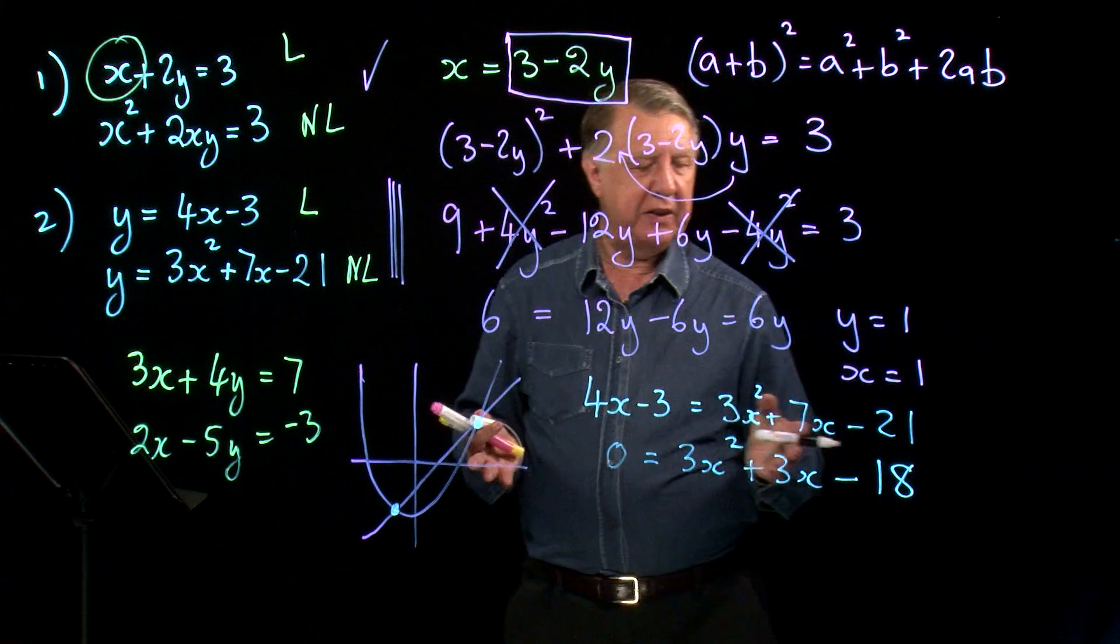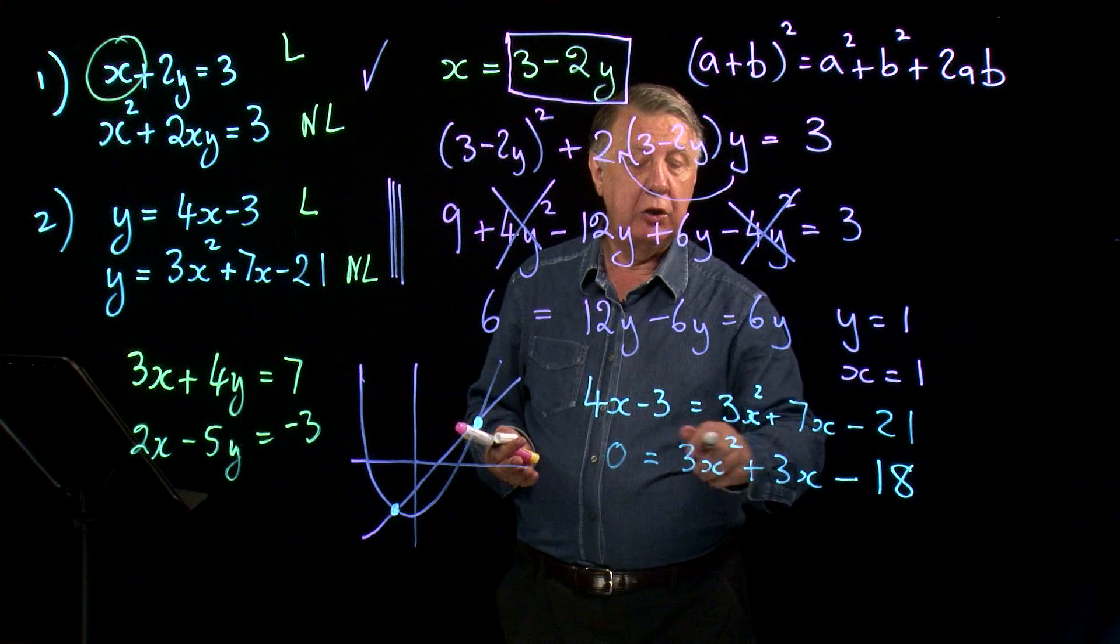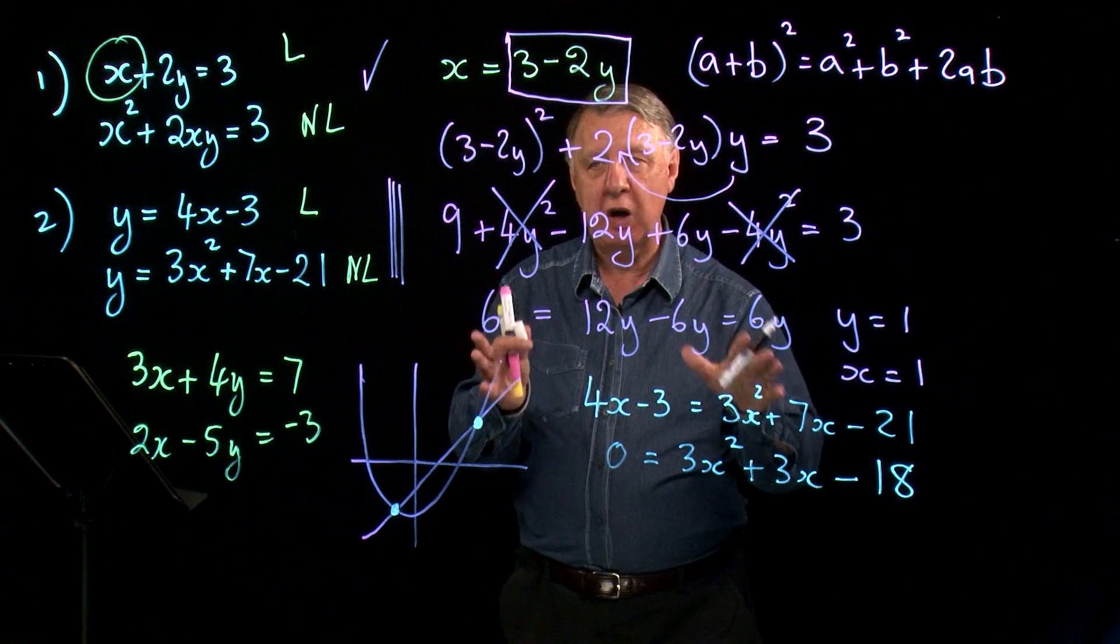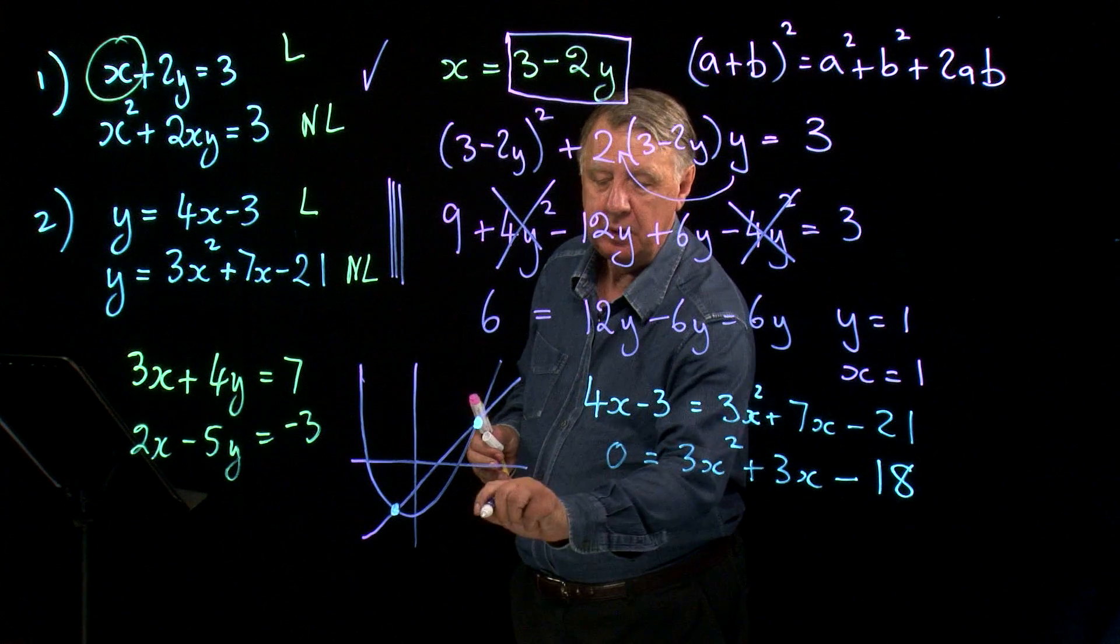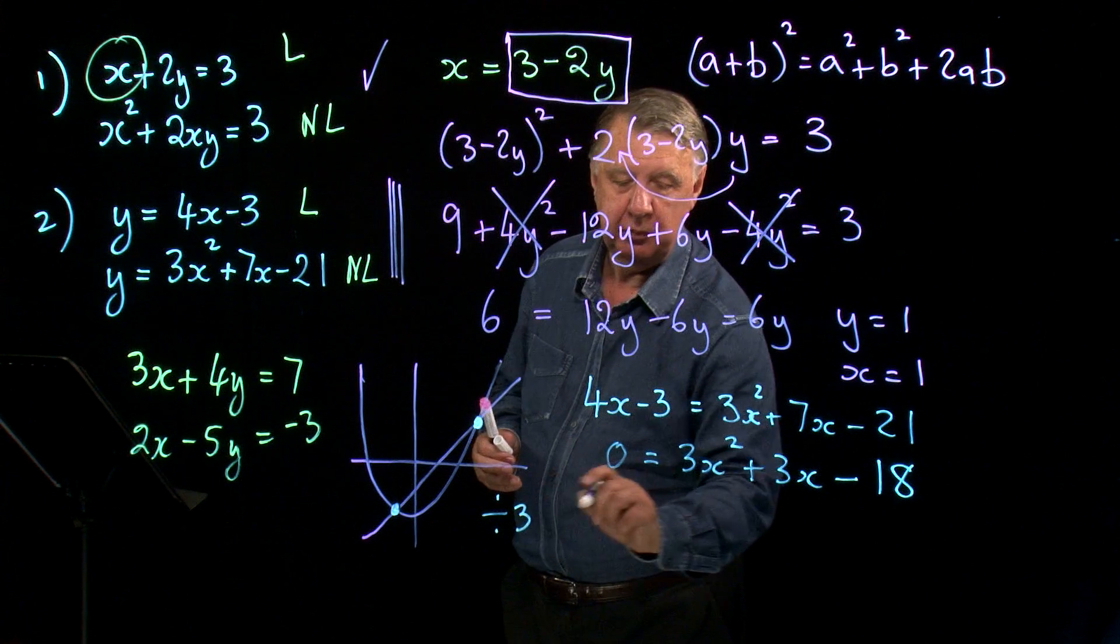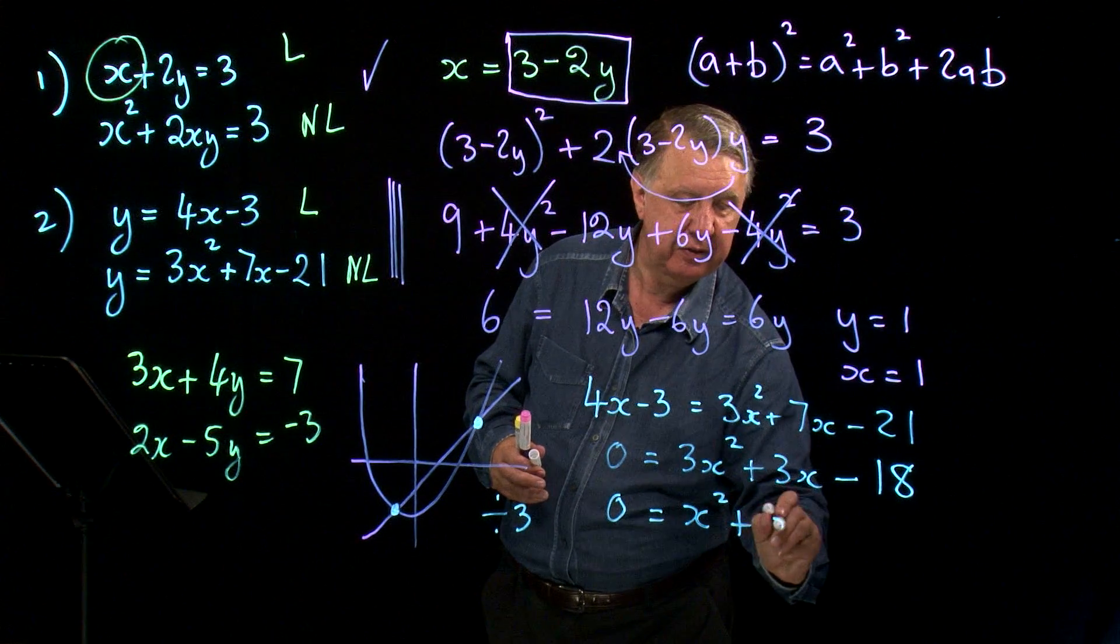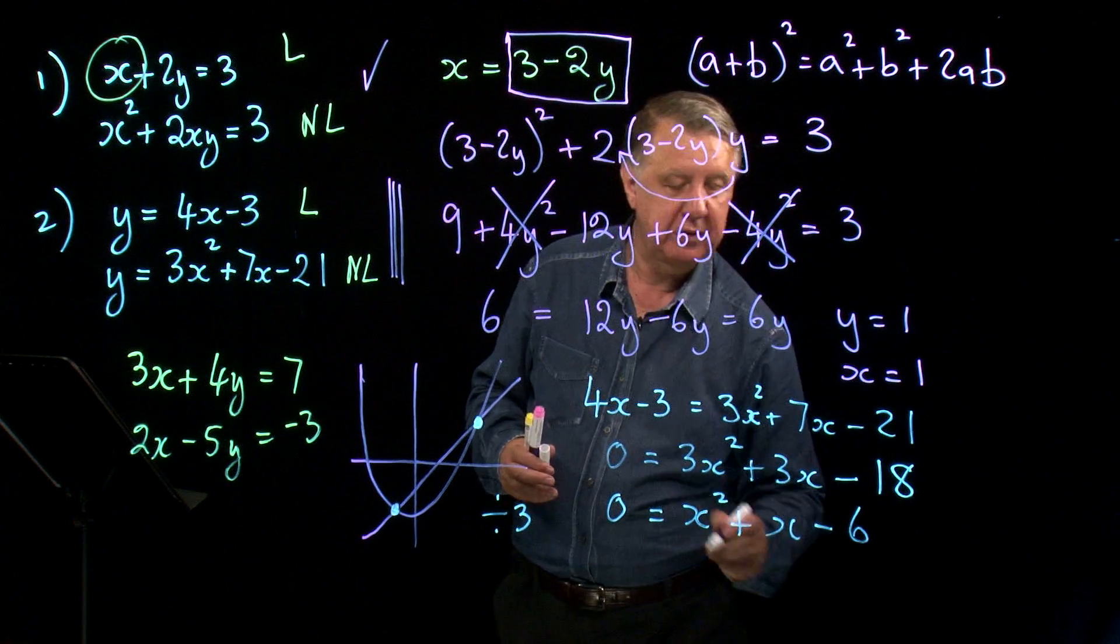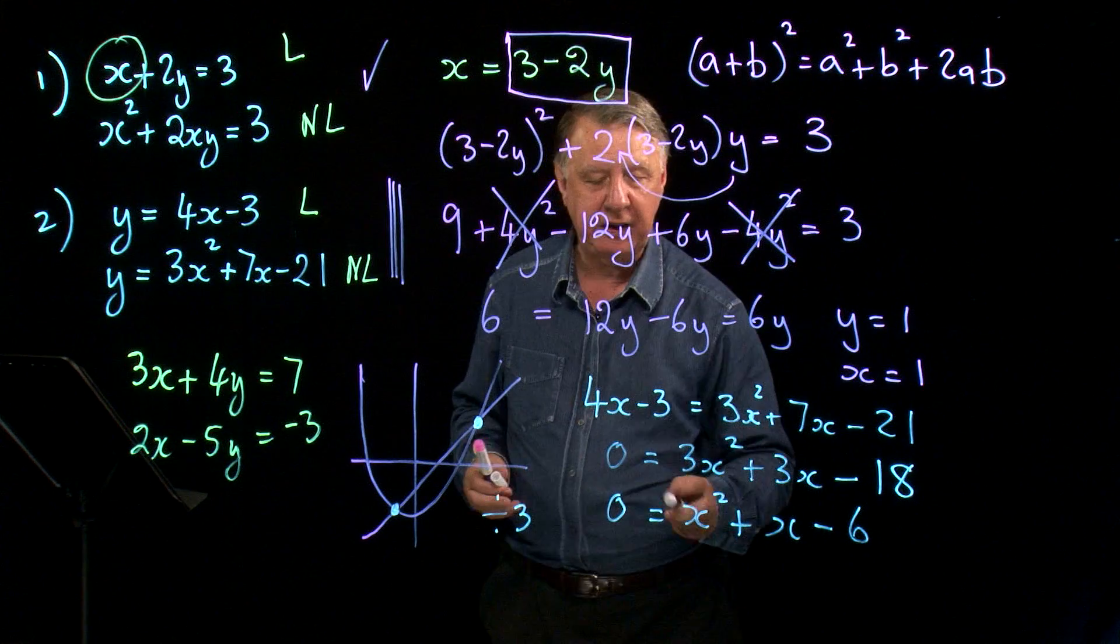Again, remembering core 1, our quadratic equation is going to crop up over and over and over again. Look at it carefully. Don't just rush into it. You can divide through by 3. So we get x² + x - 6. Usually division by a number makes it a lot easier to factorise.